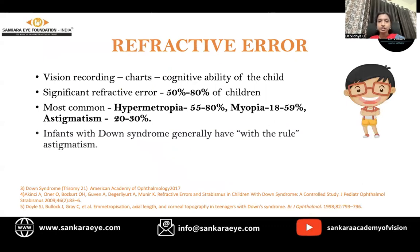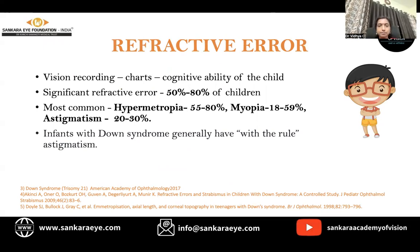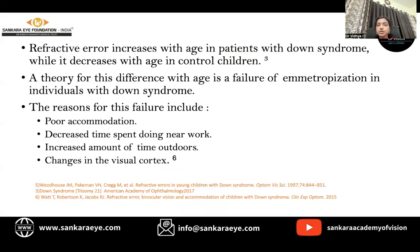Regarding refractive errors, vision recording needs to be done according to vision charts depending on the cognitive ability of the child. Significant refractive errors are seen in about 50% to 80% of children, most common being hyperopia followed by myopia and astigmatism. Infants with Down syndrome generally present with astigmatism. The refractive error increases with age compared to normal controls, due to a failure of emmetropization. Reasons include poor accommodation, decreased time spent during near work, increased time outdoors, and changes in the visual cortex.